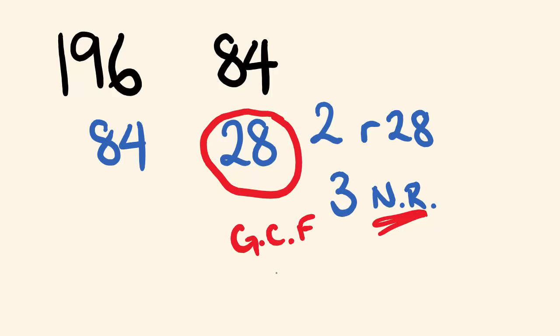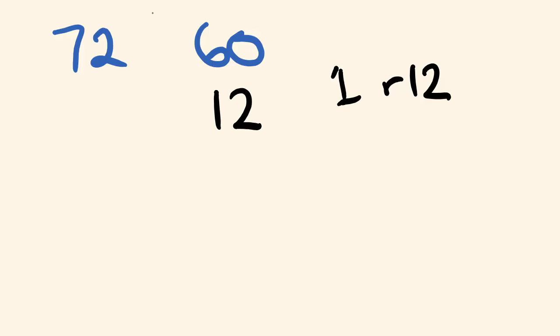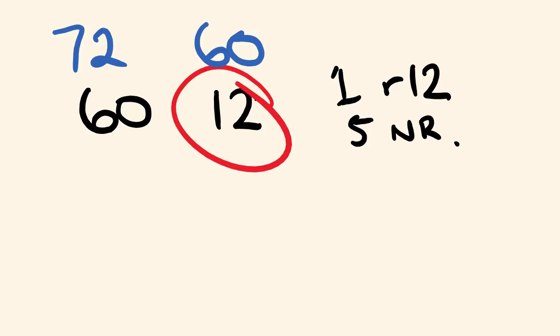So what about we have a look at a couple more examples. Say we had 72 and 60. You may be able to work out the factors straight away — and that's great. But I'm just going to use it to show you this method. We're going to divide 60 into 72. 60 goes into 72 one time, with a remainder of 12. So this remainder we're going to put down here. Now we look at 60 and 12. How many times does 12 go into 60? It goes in five times with no remainder. So 12 is our highest common factor.